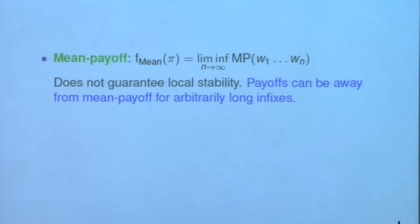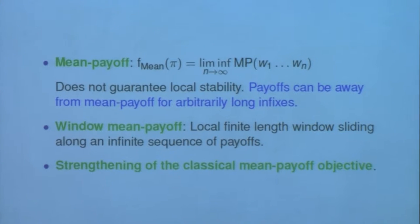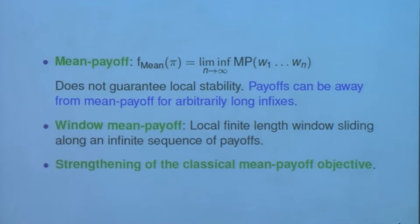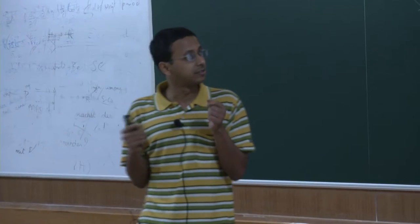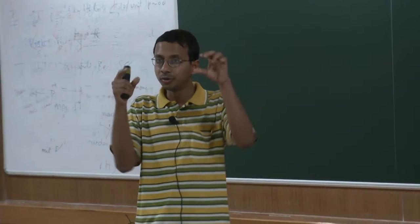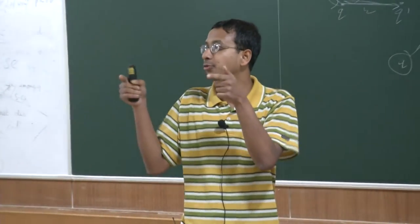For example, if the min payoff value is something like lambda, then it is possible that for arbitrarily long infixes the value is actually far away from this min payoff lambda. That is why we have the notion of window min payoff, which is a stronger notion than classical min payoff, where we consider a window sliding over the infinite sequence and require that for each local window a particular threshold is satisfied.